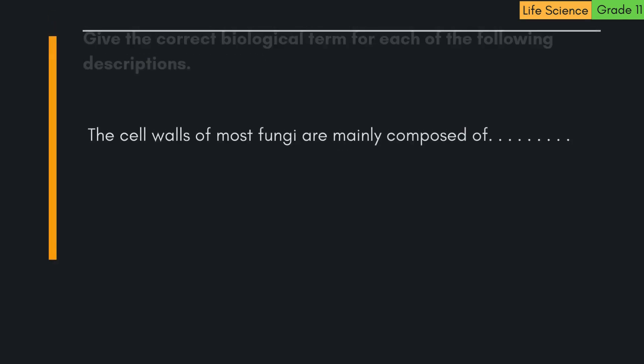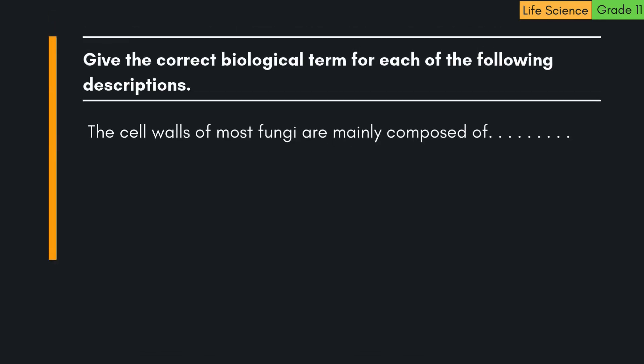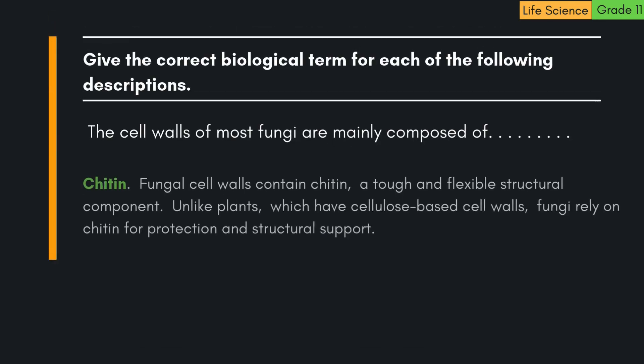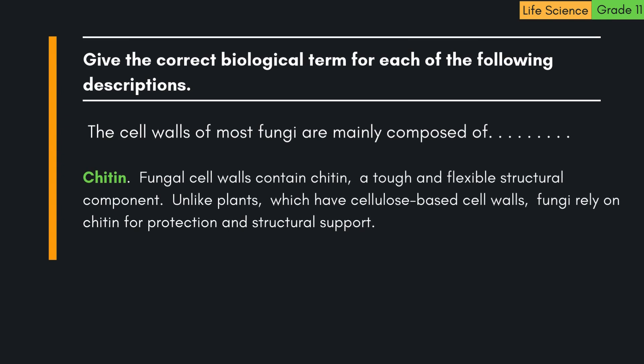The cell walls of most fungi are mainly composed of chitin. Fungal cell walls contain chitin, a tough and flexible structural component. Unlike plants, which have cellulose-based cell walls, fungi rely on chitin for protection and structural support.